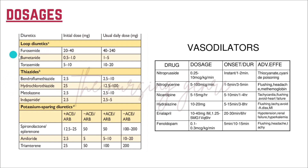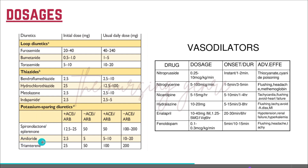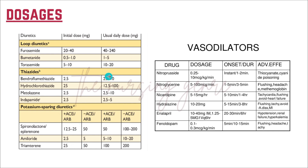For diuretics: furosemide 20 to 40 mg, torsemide 5 to 10 mg. Thiazides: hydrochlorothiazide 25 mg, metolazone 2.5 mg, indapamide 2.5 mg. Potassium-sparing diuretics: amiloride 2.5 mg. Doses should be adjusted based on the patient's blood pressure.